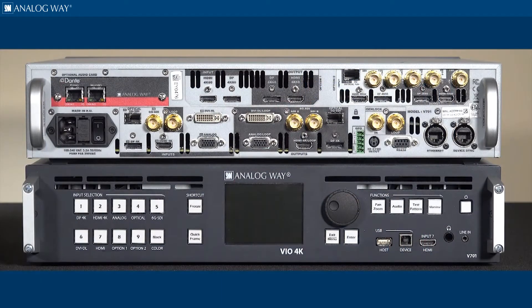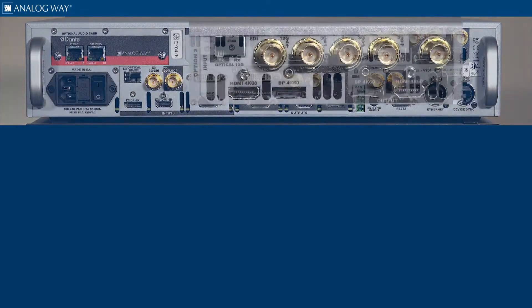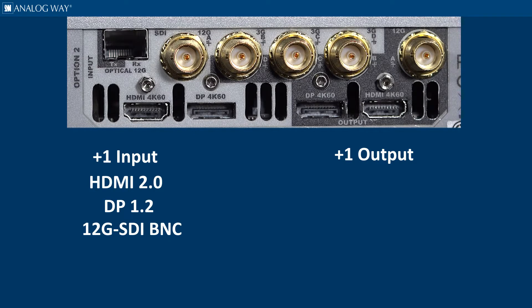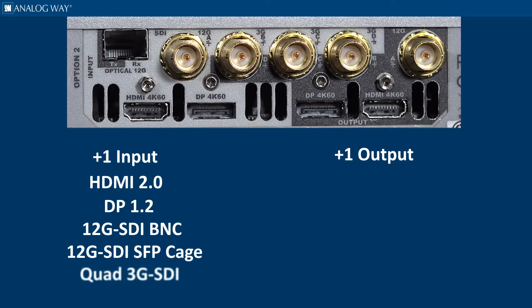This video, we're going to talk about the HDP 4K SDI expansion option card for your Vial 4K. This expansion option card adds one input with one output, but each have multiple connectivity options. There are five available input plugs, which include HDMI 2.0, DP 1.2, 12G SDI BNC, 12G SDI SFP cage, and quad 3G SDI.